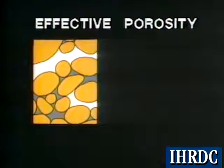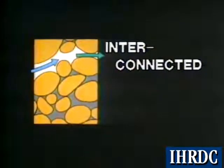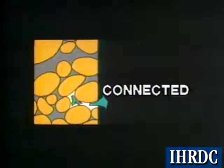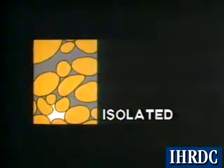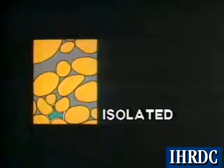Interconnected and connected pores constitute effective porosity because hydrocarbons can move out from them. In the case of interconnected porosity, oil or gas can be flushed out by a natural or artificial water drive. Connected porosity is unaffected by flushing, but may yield some oil or gas by expansion as reservoir pressure drops. Isolated porosity is unable to yield hydrocarbons — any oil or gas they contain entered the pore space before closure by compaction or cementation.